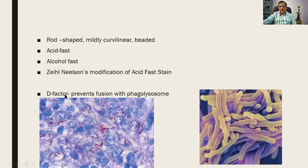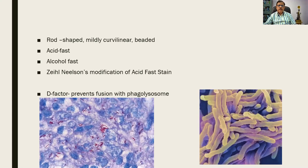For the virulence of the organism, there is a factor called the D factor which prevents the fusion of the lysosome with the phagolysosome — we will see that later. The D factor is responsible for the virulence of the organism. There is also another factor called the cord factor (C-O-R-D) which helps the organism to grow in cords.